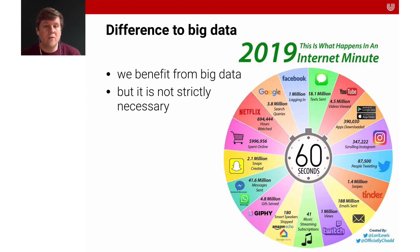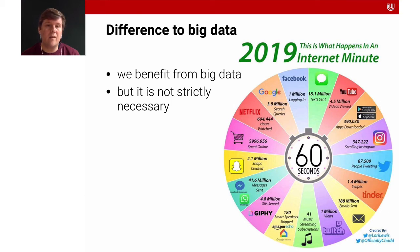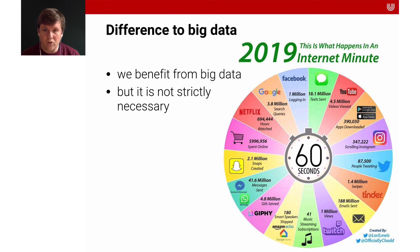Also important to data science is big data. Data science can also be done with much smaller data, but big data makes things easier and more expressive. In one internet minute there's a million logins on Facebook, 3.8 million searches, 700,000 hours watched on Netflix, and many other kinds of data created. All this data can be analyzed the same way we analyzed Facebook Likes — we can learn a lot about people and society through these means.